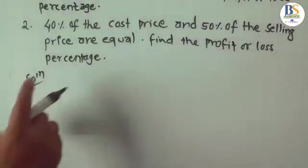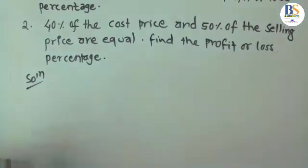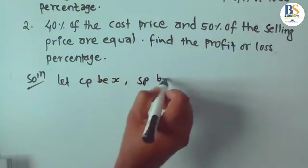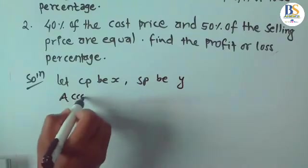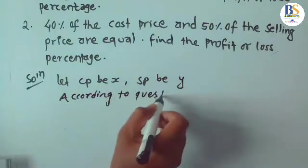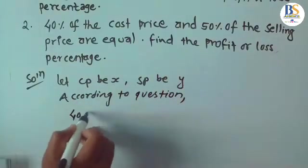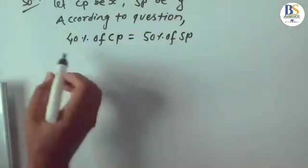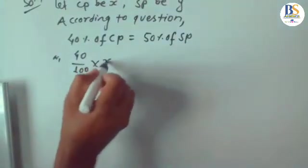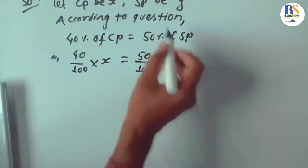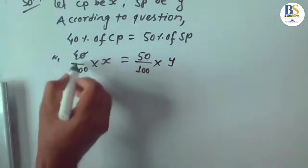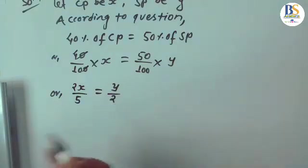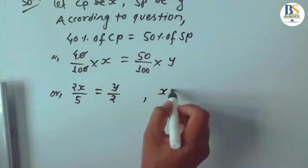Question two: forty percent of the cost price and fifty percent of the selling price are equal — find the profit or loss percentage. Let CP be X and SP be Y. According to the equation, 40% of CP equals 50% of SP, so 40/100 × X = 50/100 × Y. Reducing to lowest form: 2X/5 = Y/2. This gives X = 5Y/4 and Y = 4X/5.